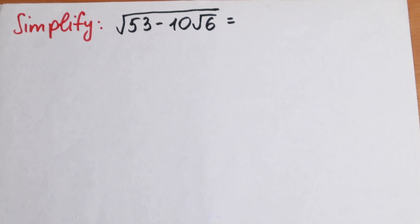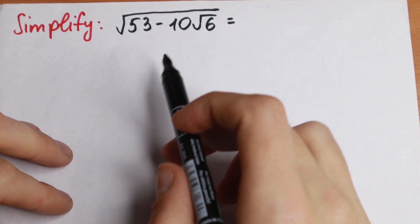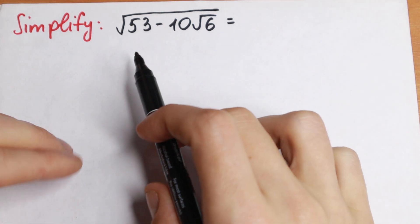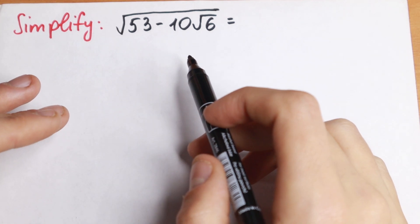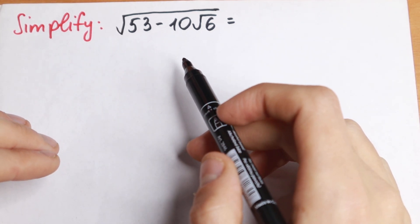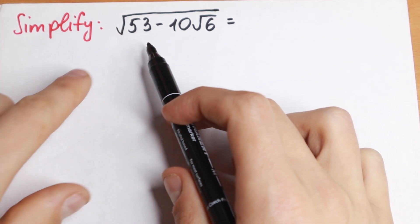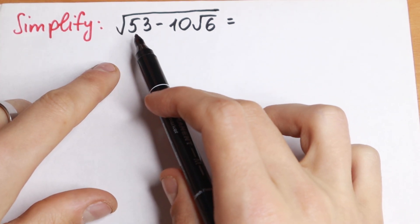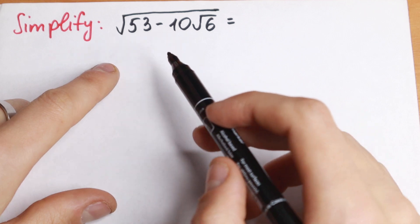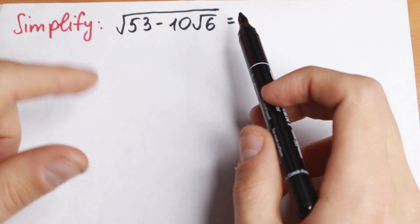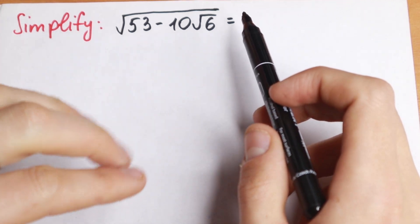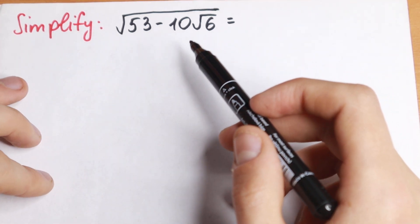Hello everyone, welcome back to Mathmoon. Today we have an interesting algebra problem. I thought this problem was from Cambridge University, so let's try to solve it. We have √(53 - 10√6). How can we solve this interesting question?